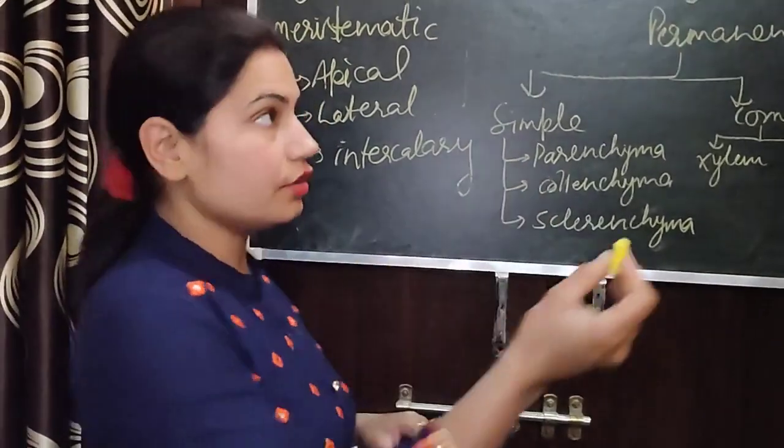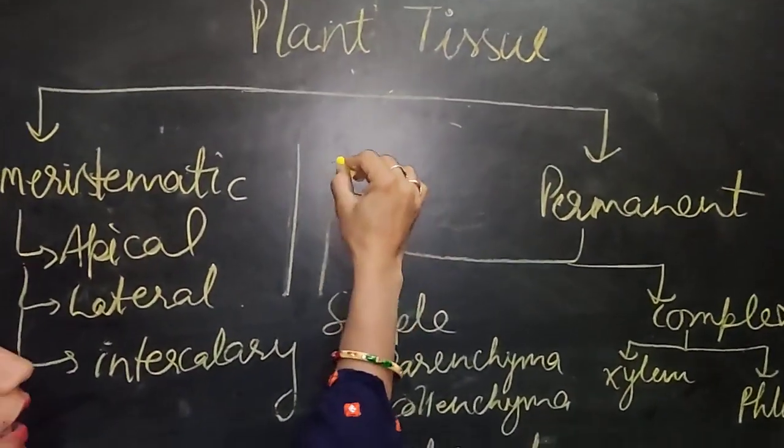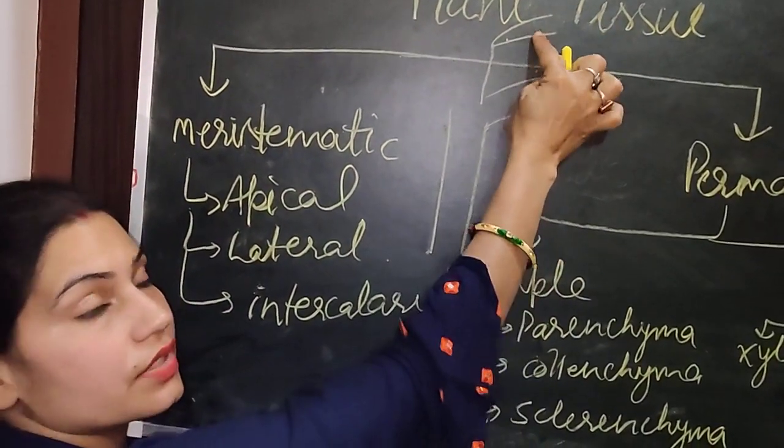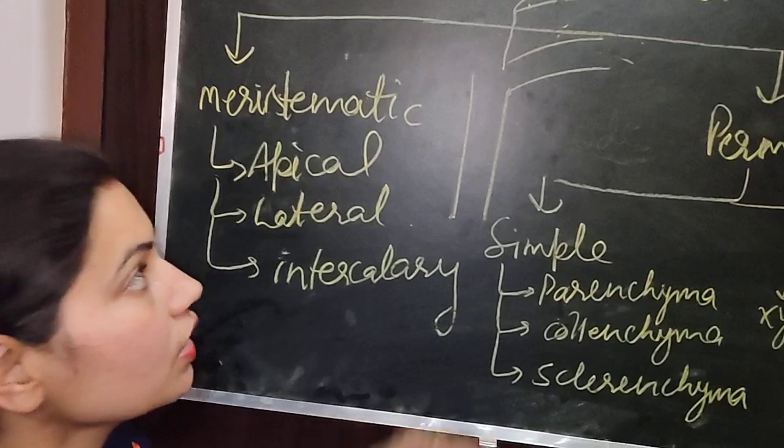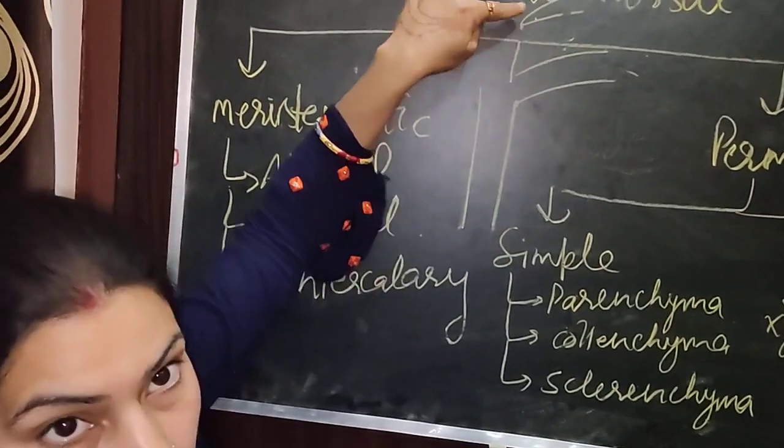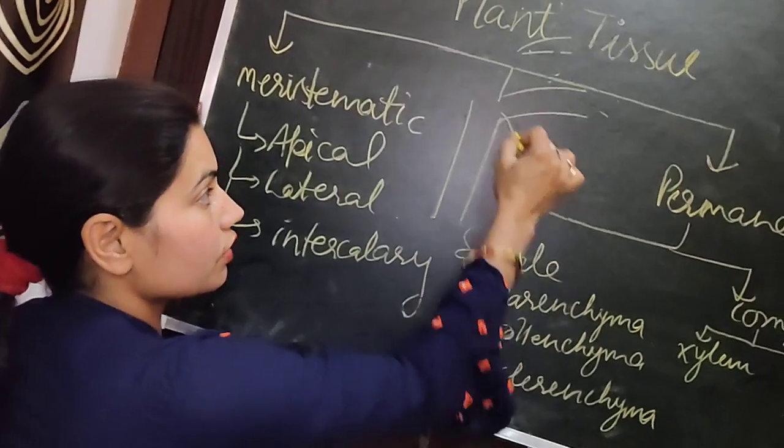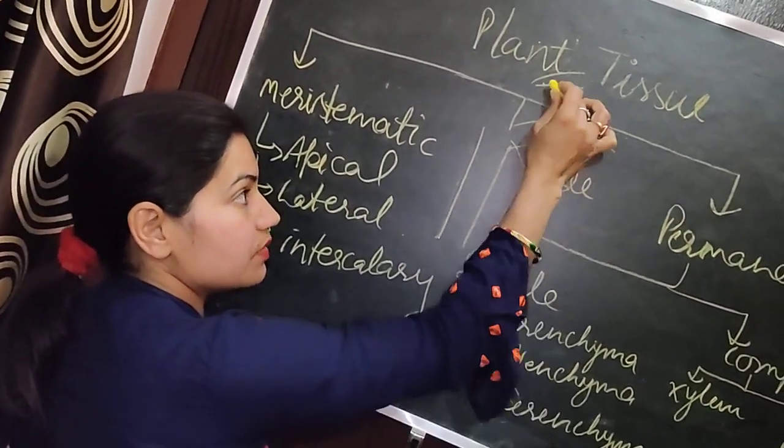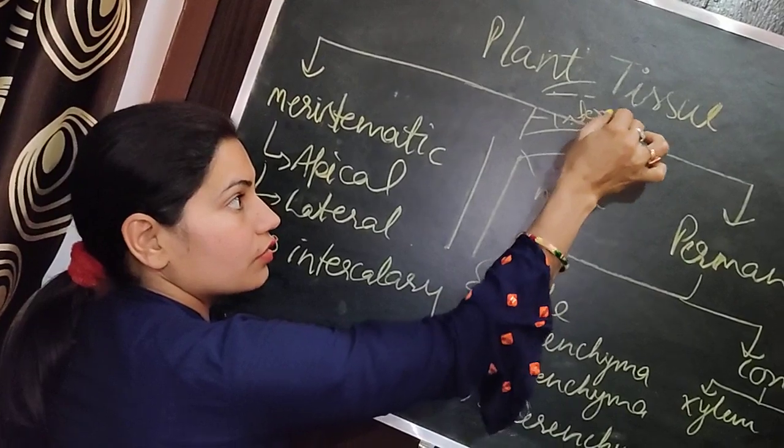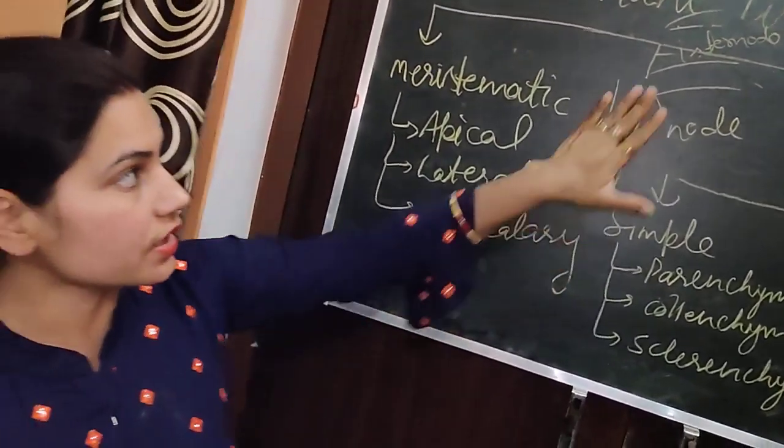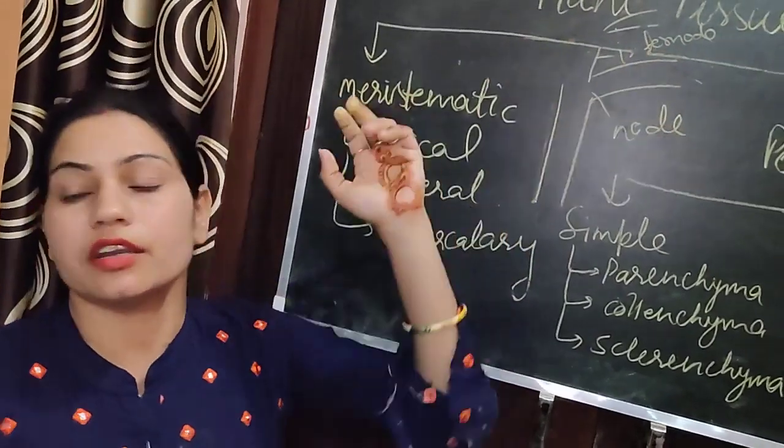What is node and inter-node? Suppose this is a plant and here branches start. This is one branch, this is the second branch. The point from where these branches arise is known as node. And the space between two nodes is known as inter-node. So intercalary meristem is present at the base of node and inter-node.